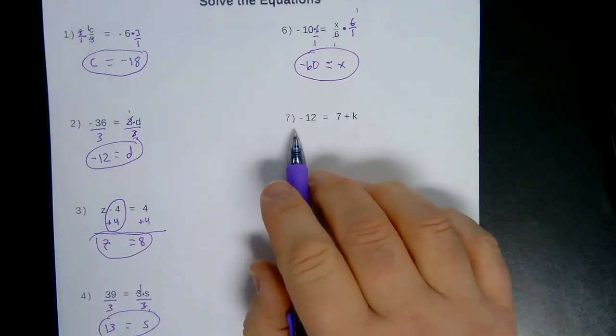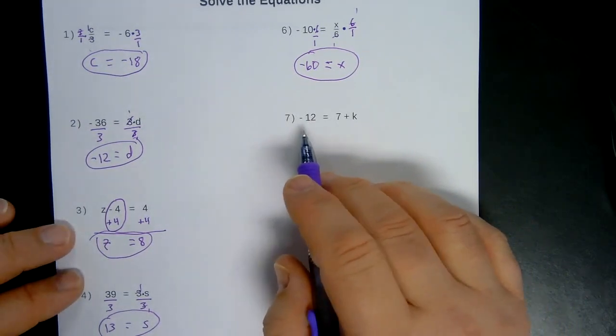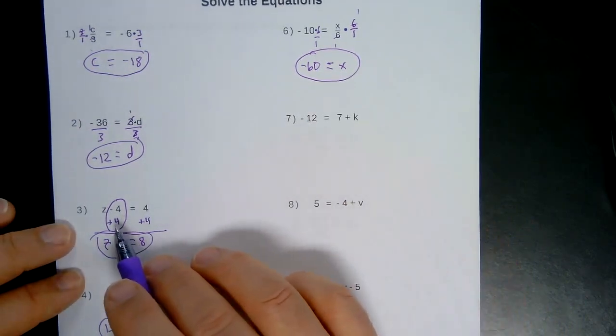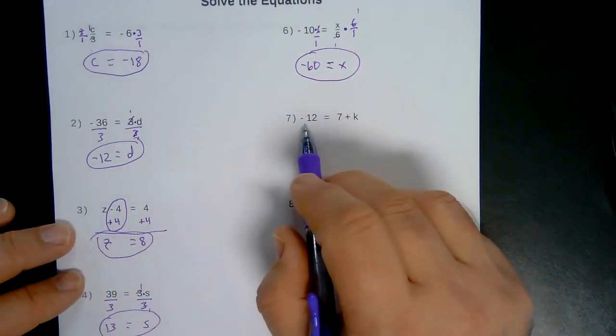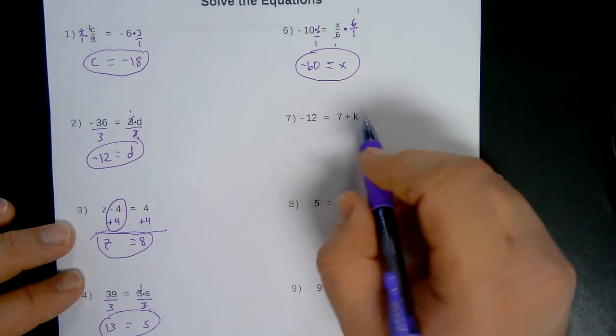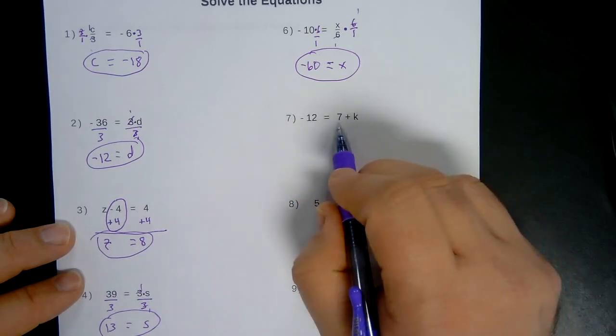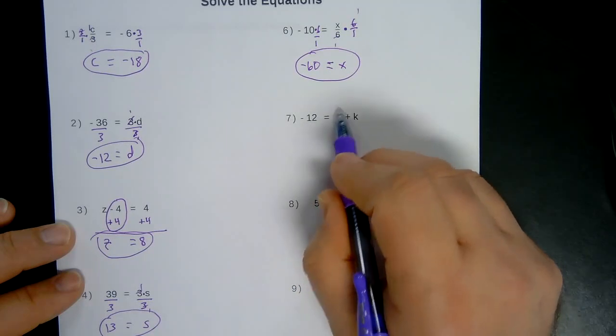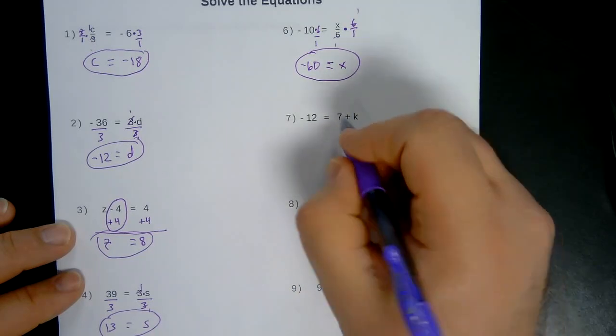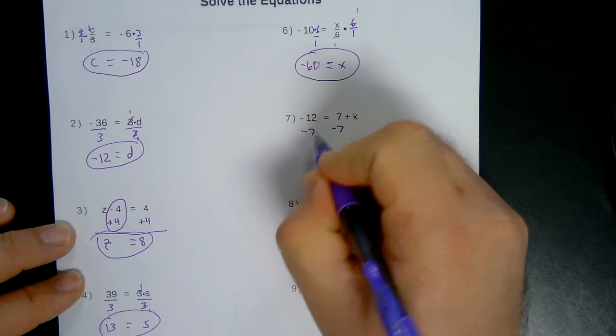And number 7 gives us the opposite type of question. At number 3, we had to add 4 to both sides. This is negative 12. 7 plus K. Notice the 7 is a positive 7. Now we need to get rid of that. So I want to subtract 7 from both sides.